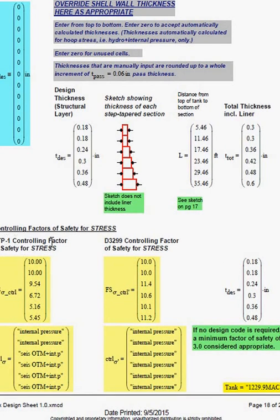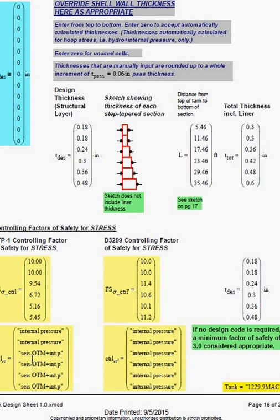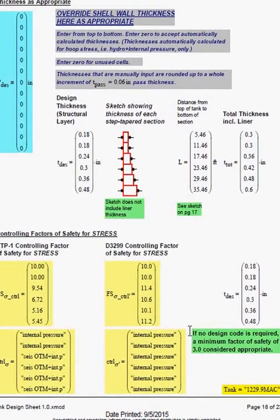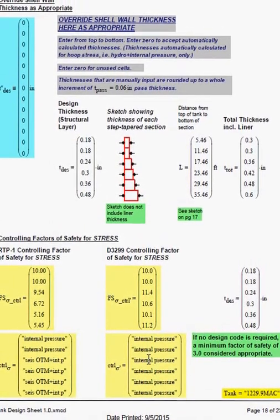For the RTP1, the controlling factors. And for 3299, the controlling factors. And then what controls the internal pressure in this case for the top two bands. And then seismic overturning plus internal pressure. And for 3299, it's all internal pressure.